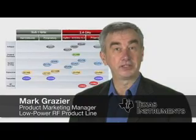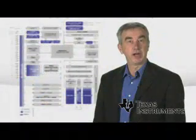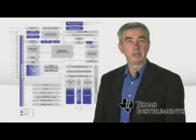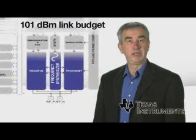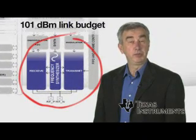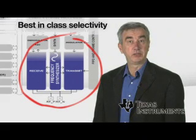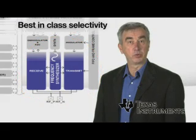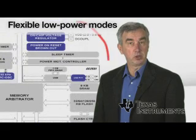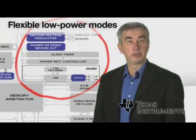It's with great pleasure that I introduce TI's latest addition to the IEEE 802.15.4 family, the CC2530. Some highlights of the CC2530 include its 101 dBm link budget to maximize communication range, and best-in-class selectivity to minimize the effect of interference sources, and flexible low-power modes to maximize longevity of battery-operated devices.